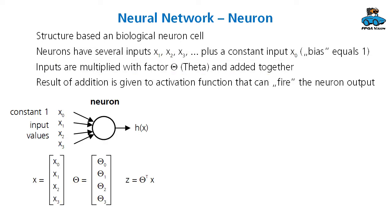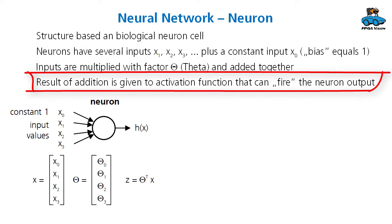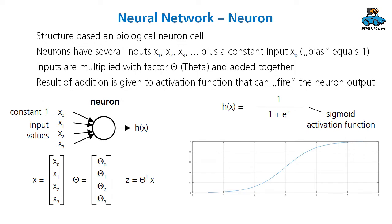The weighted sum of these factors is the value z. The result of that addition is given to an activation function, which again resembles the biological cell — it can fire the neuron if the pattern of the input matches the function of the neuron. This is the sigmoid function. If the input gives a low value, then the neuron does not fire.